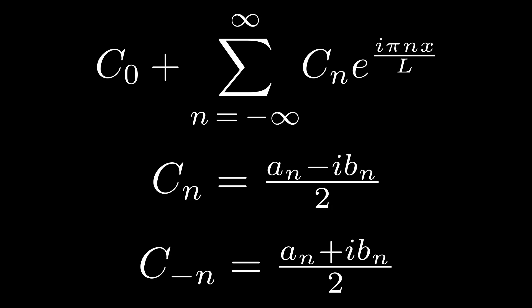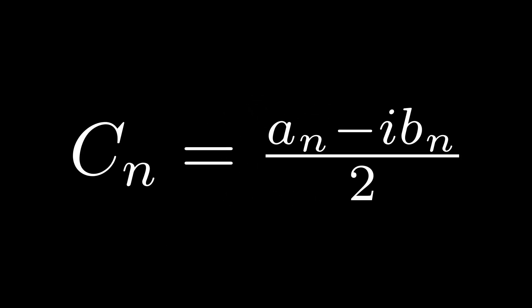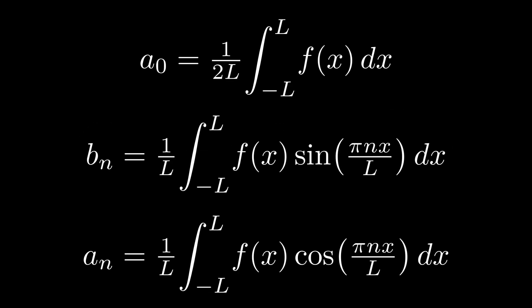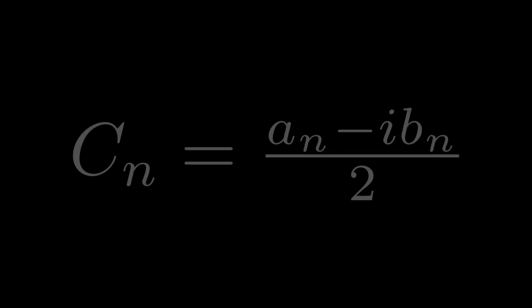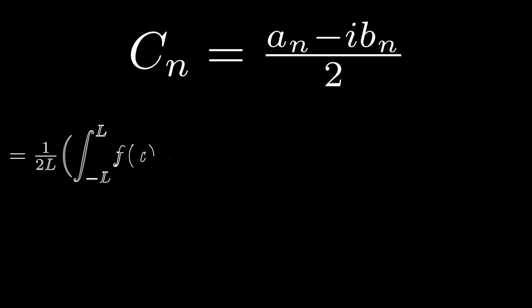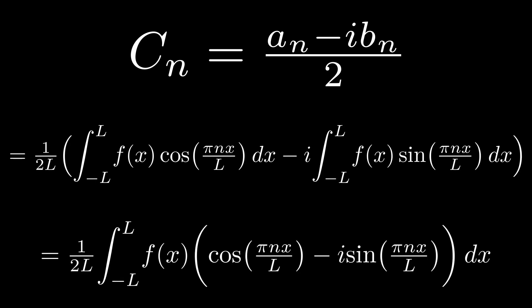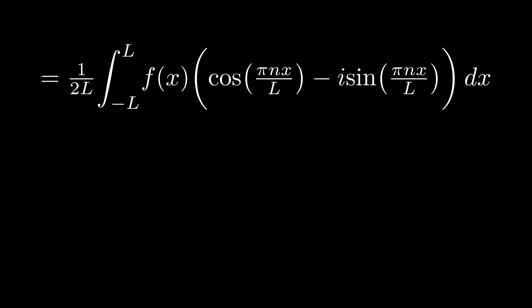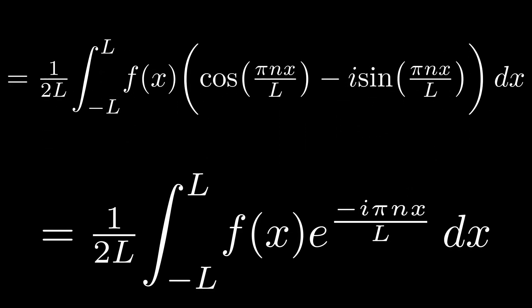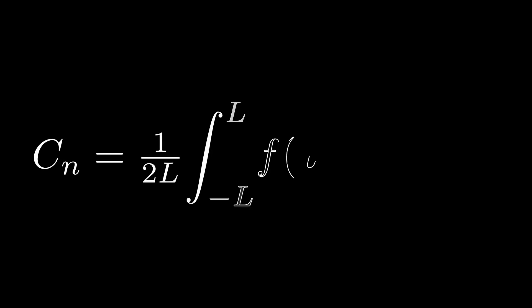There is in fact an integral formula for this c sub n. Notice that c sub n equals a sub n minus i b sub n over 2. We already have formulas for a sub n and b sub n, so we can plug those into the equation for c sub n. Notice now that we can combine the integrals, and this should look familiar. Cosine of pi nx over l minus i sine of pi nx over l is equal to e to the power of minus i pi nx over l. Now, since c sub minus n is just the complex conjugate of c sub n, the exponent in the integrand can be positive or negative. The sine only determines which way we're integrating around the complex unit circle, so the sine in the exponent is just convention.